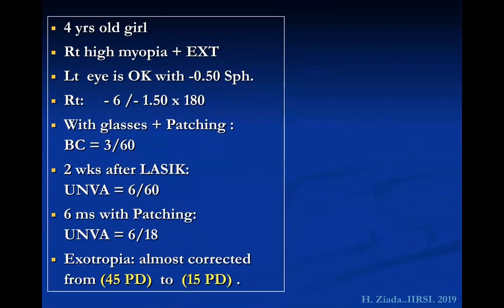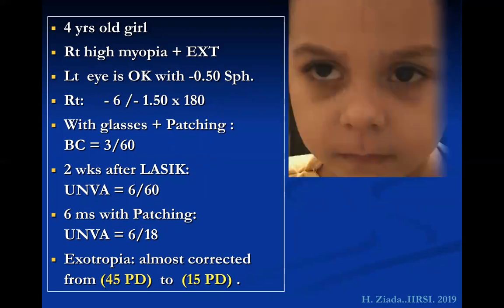The second case is a four-year-old girl with right eye myopia and exotropia; the left eye was normal with just -0.50 sphere. The right eye was -6.00/-1.50. With glasses and patching, her best corrected visual acuity was 3/60. Two weeks after LASIK, unaided visual acuity was 6/60. After six months of patching, unaided visual acuity was 6/18. The exotropia was almost corrected from 45 to 15 prism diopters — an insignificant remaining angle — so I am continuing follow-up.